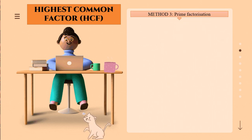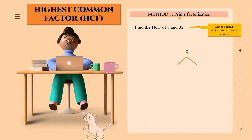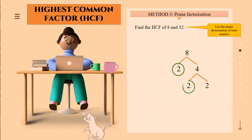Now we look at Method 3: prime factorization. For example, find the HCF of 8 and 32. Prime factorization uses the factor tree. For 8: 8 is 2 times 4, and 4 is 2 times 2. So 8 equals 2 times 2 times 2.